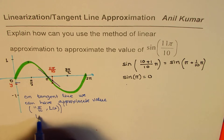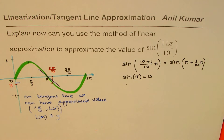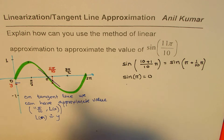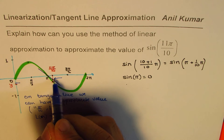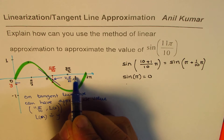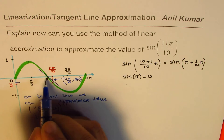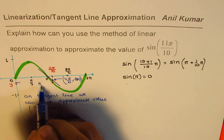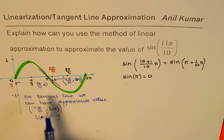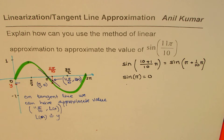So I'll call this point (11π/10, L(x)) as the approximate point, and the known point is (π, 0). Now if we know two points on a line and the slope, we can find the equation of the line and the y-value. That is the whole concept.